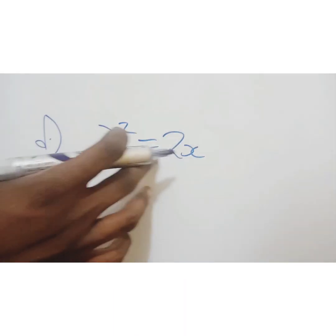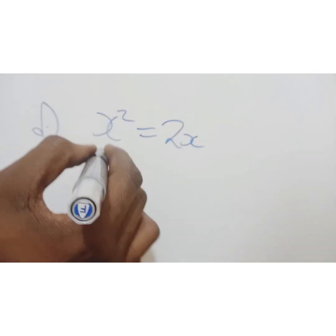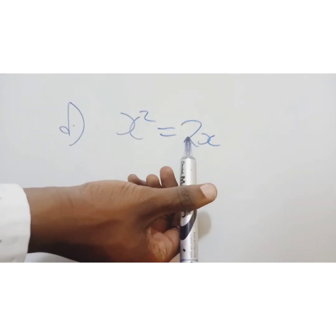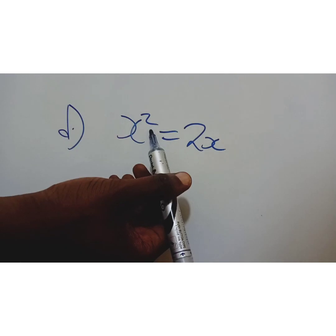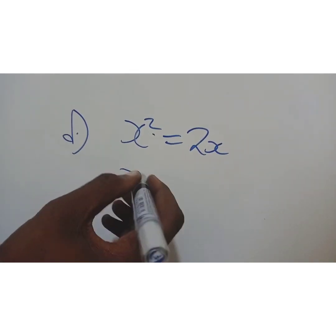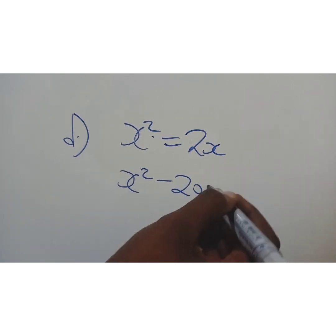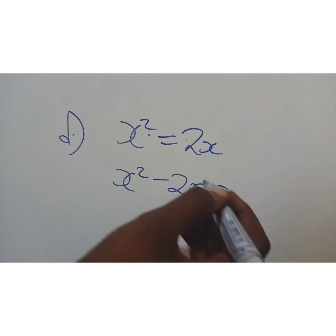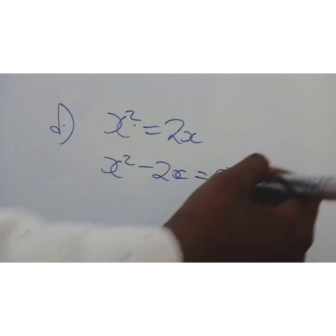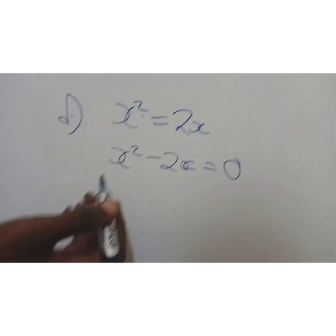We have this x squared equals 2x. So what we do here, this 2x must go to the other side. So x squared is positive. Once it goes to the other side, minus 2x equals, what remains this side? It's 0 because there's nothing.